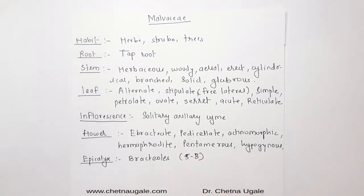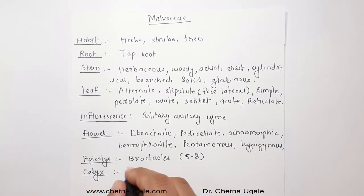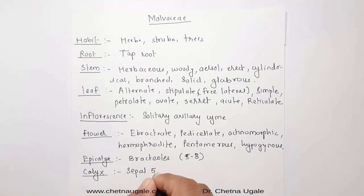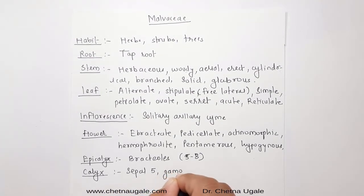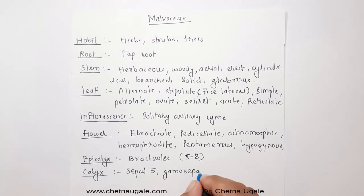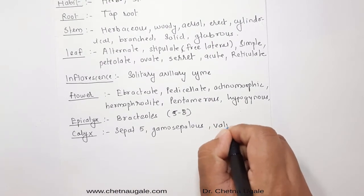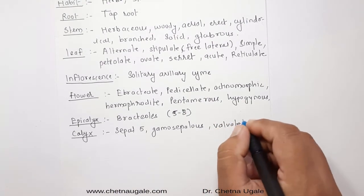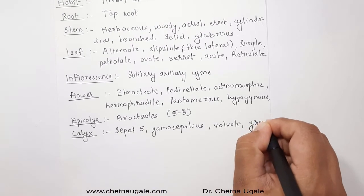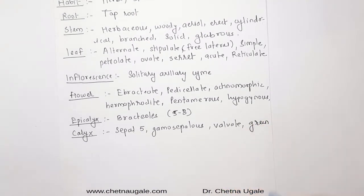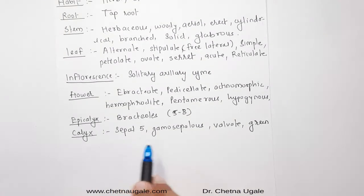The next is the calyx. The calyx consists of five sepals; it is gamosepalous, meaning the sepals are united to each other. The aestivation is valvate, and the calyx is sepaloid, meaning the sepals are green in color.